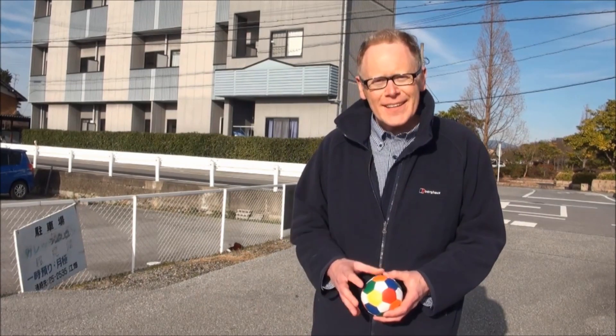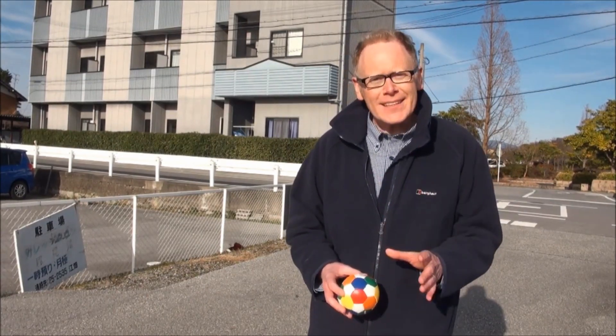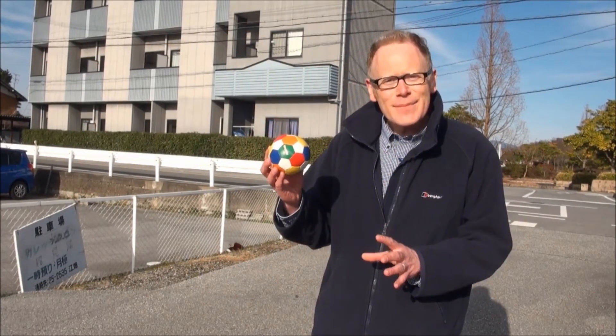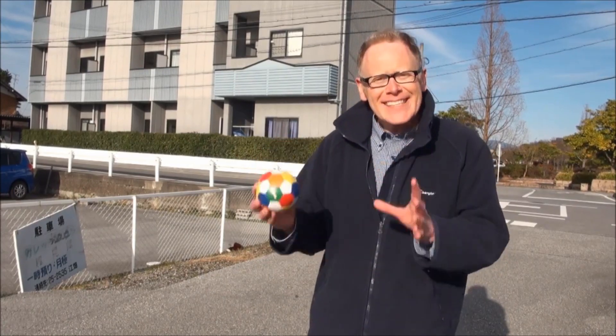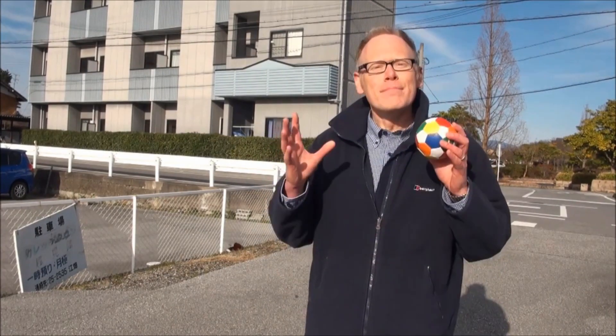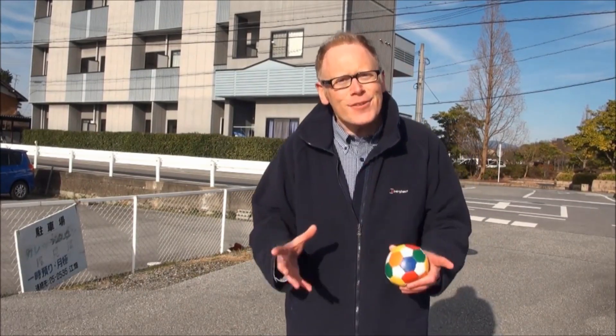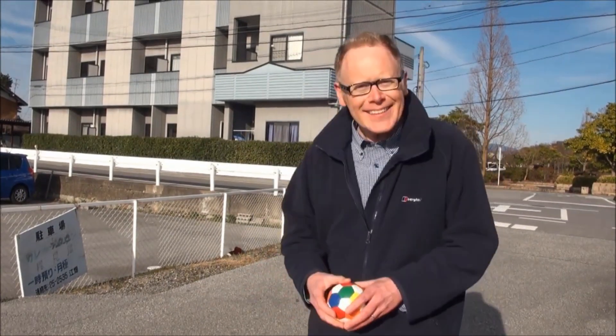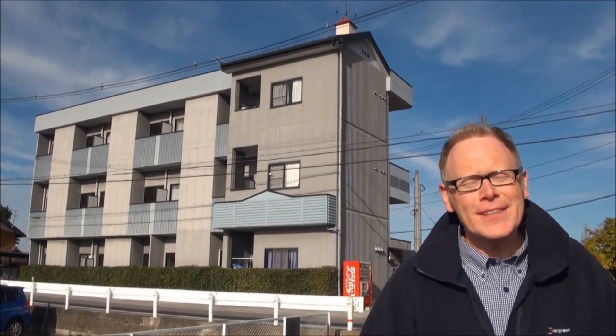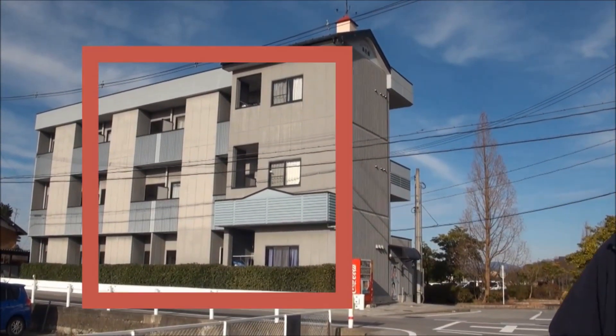And how about the Sun? Well, on the same scale, where the Earth is ten centimeters in diameter, the Sun is ten point nine meters across. That's the height of a three-story building, like this student apartment block next to the University of Shiga Prefecture here in Japan.